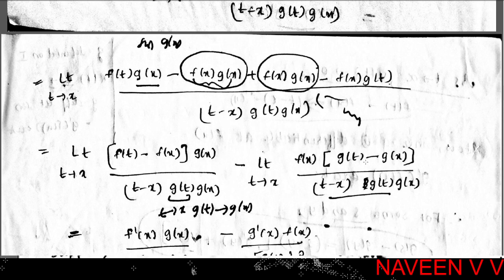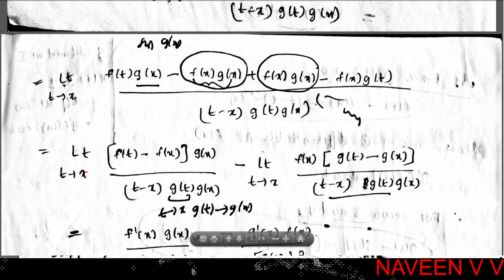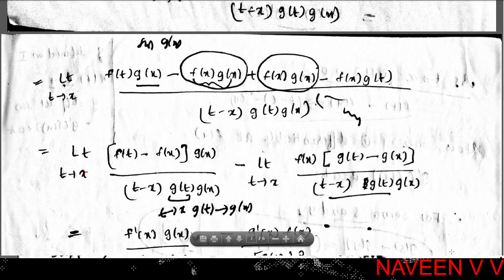Applying the limit difference rule, this equals: limit t→x of [f(t) - f(x)]·g(x) / [(t - x)·g(t)·g(x)] minus limit t→x of f(x)·[g(t) - g(x)] / [(t - x)·g(t)·g(x)].